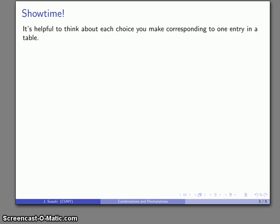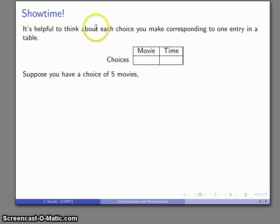A very convenient way of thinking about this is to imagine that each choice corresponds to one entry in some sort of a table. Going back to the movie and showtime example, I have my choice of movies and my choice of times. Let's say I have a choice of five movies in the theater and a choice of three showtimes.